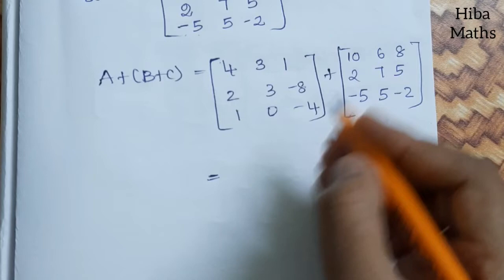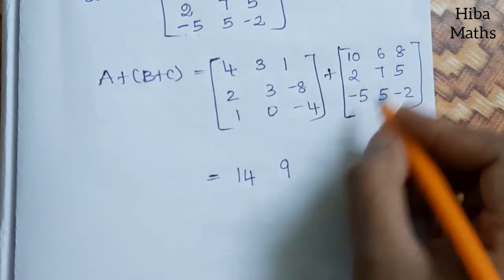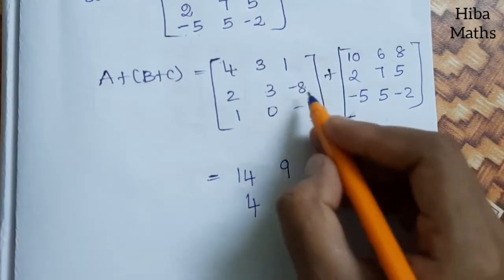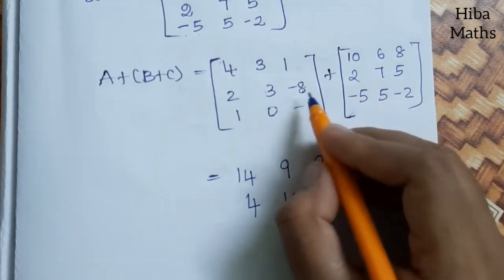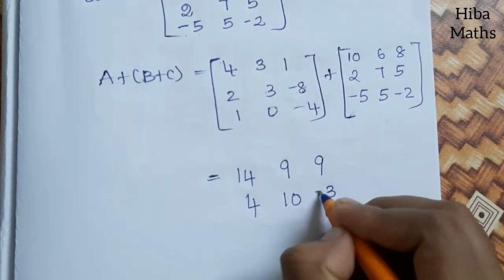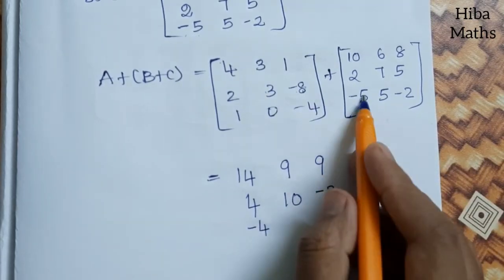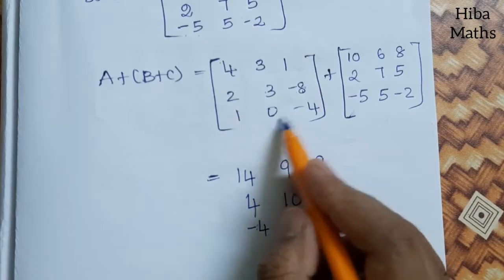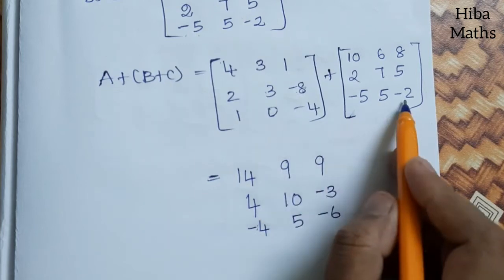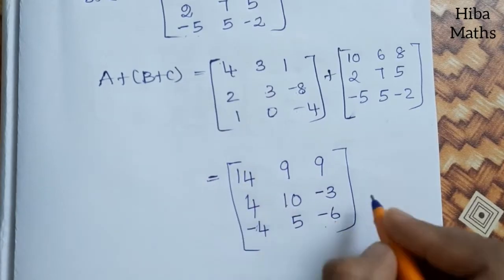Final answer: 4+10=14, 3+6=9, 1+8=9, 2+2=4, 3+7=10, -8+5: since the larger number 8 has minus, result is -3. 1+(-5): minus 4. 0+5=5, -4+(-2)=-6. So LHS = A+(B+C) = [14,9,9; 4,10,-3; -4,5,-6]. This is our first result.